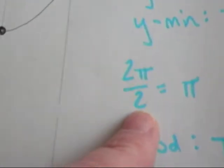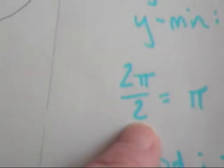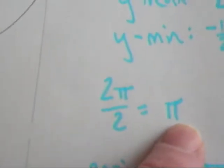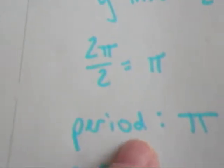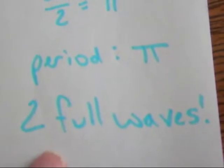Then, remember I always take two pi and put it over the b value, in this case my b value was two. Two pi over two reduces to just pi, which means that the period is a length of pi, which means that we should see two full waves.